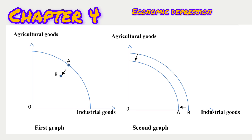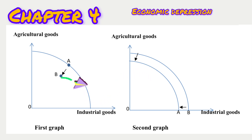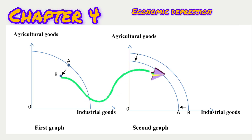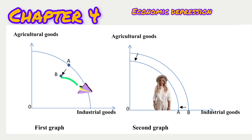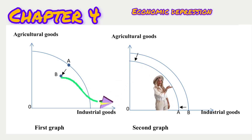A prolonged recession leads to an economic depression, where resources, especially labor, are continuously underutilized. In severe cases, resources are destroyed, leading to a reduction in the economy's productive capacity. On the PPF graph, a long-term depression with resource destruction causes the PPF to shift to the left. Without resource destruction, it remains at point B, reflecting underemployment.